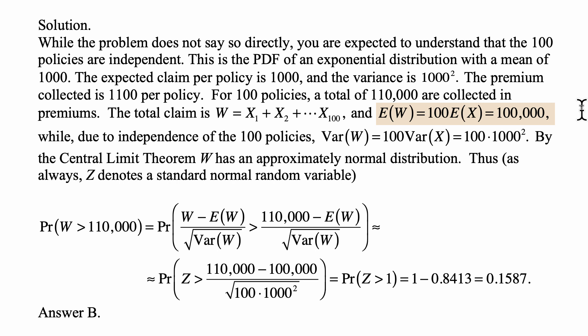We subtract the mean divided by the standard deviation, and its mean becomes 0, and the variance becomes 1. So this is the same as probability that Z, a standard normal random variable, is greater than...